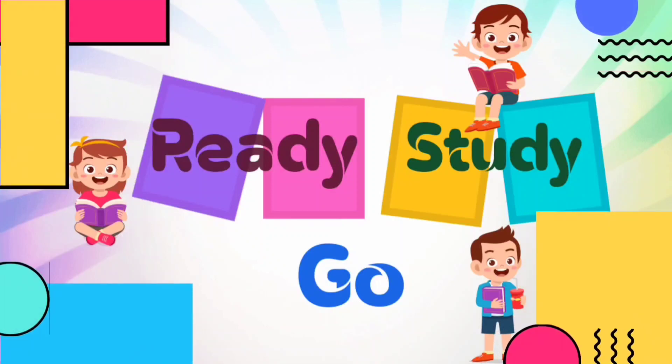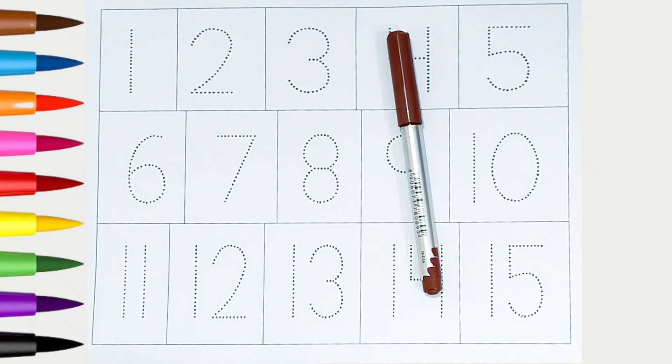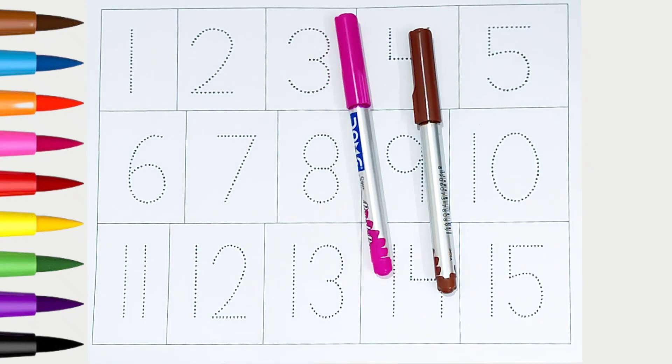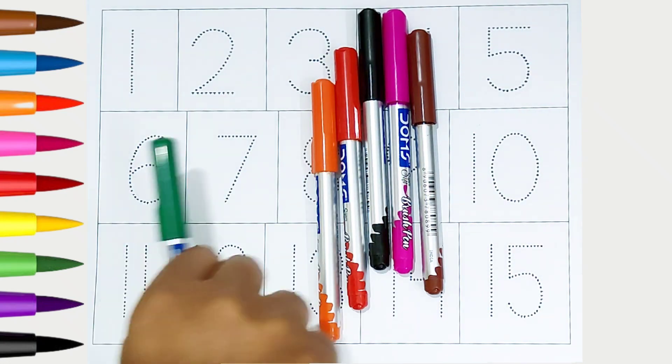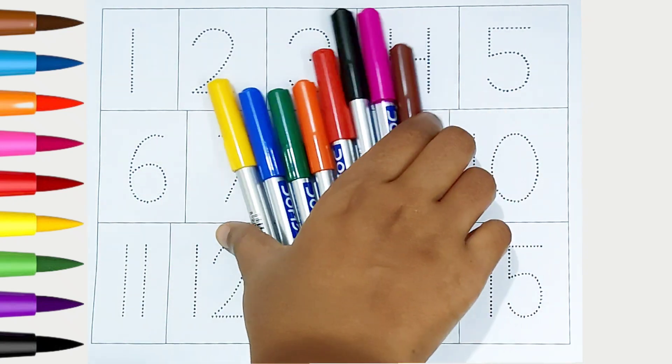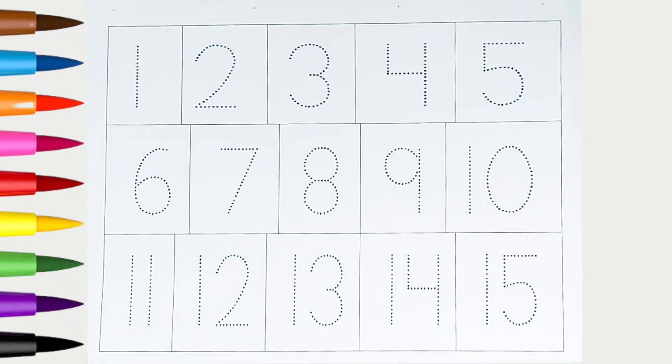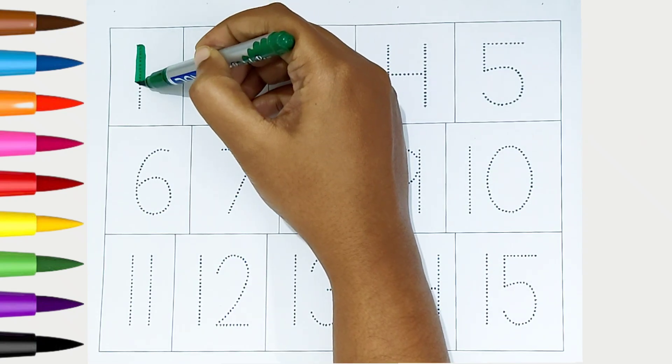Ready, study, go! Hi kids. Brown color, pink color, black color, red color, orange color, green color, blue color, yellow color. Hi kids, today we can learn the numbers from one to fifteen.